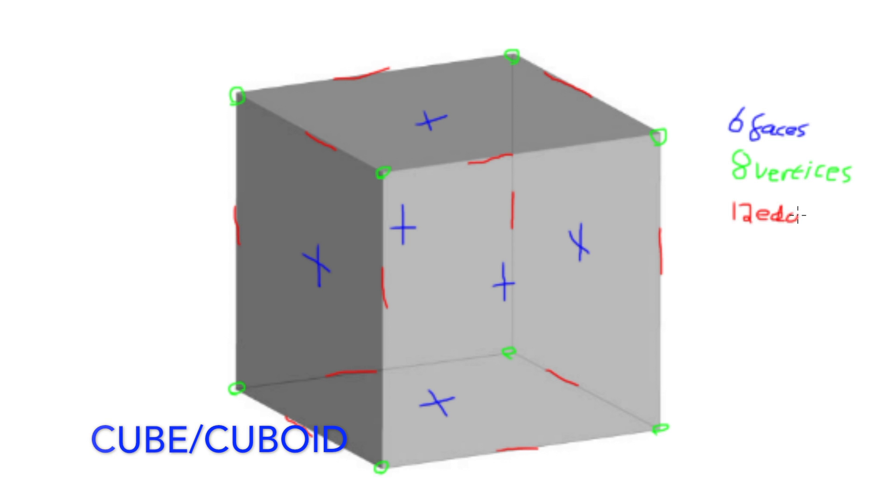A cuboid will also have 6 faces, 8 vertices and 12 edges, as it's exactly the same shape, it's just been extended in length.